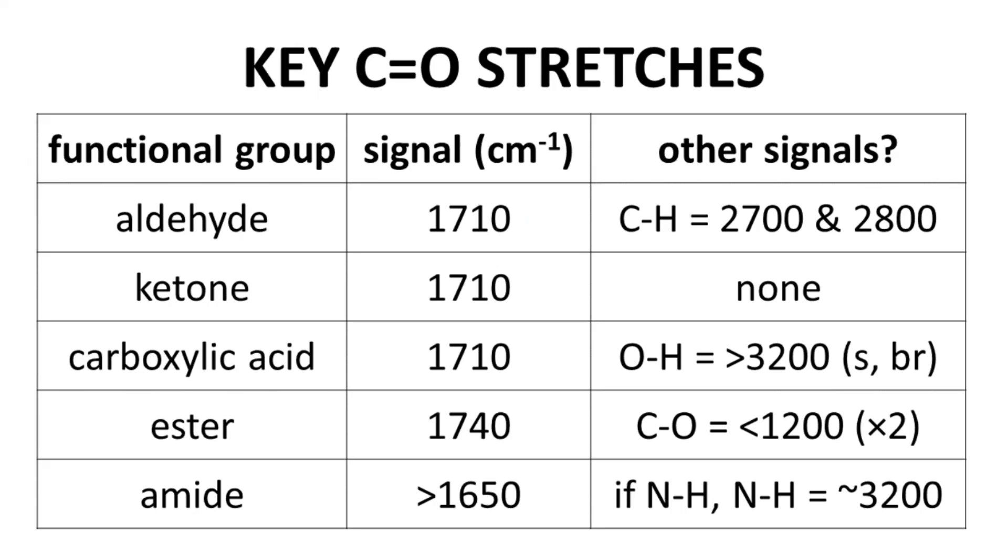For an aldehyde, you will have a carbonyl stretch at 1710. You will also see the CH stretches that are specific for aldehydes. The CH stretch in aldehydes appears as two signals, one around 2700 and another around 2800. If you see a signal at 1710 and don't have these two signals as well, then you do not have an aldehyde.